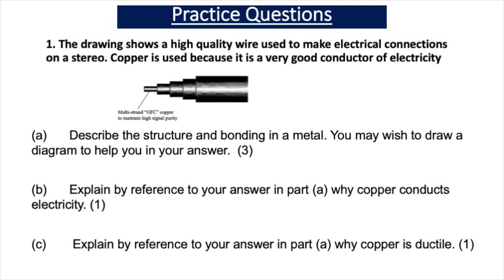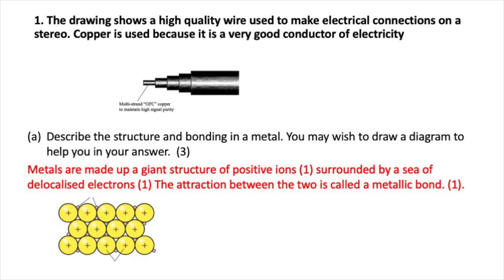Let's test your understanding with some practice questions. Question one describes a high-quality wire used to make electrical connections on a stereo, where copper is used because it is a very good conductor of electricity. Part A asks you to describe the structure and bonding in a metal. To get the three marks you need to explain that metals are made up of a giant structure of positive ions, surrounded by a sea of delocalized electrons, and that the attraction between the two is called a metallic bond. You could also draw a diagram showing positive metal ions surrounded by a sea of delocalized electrons.